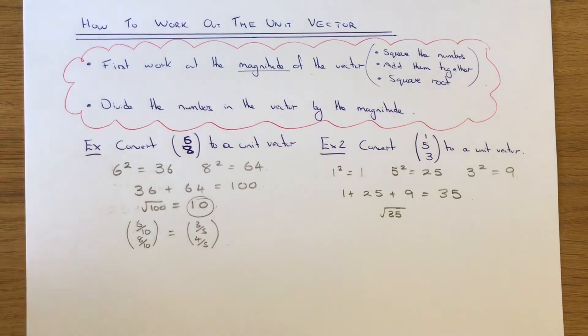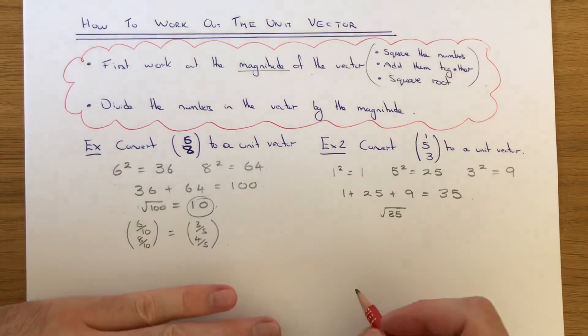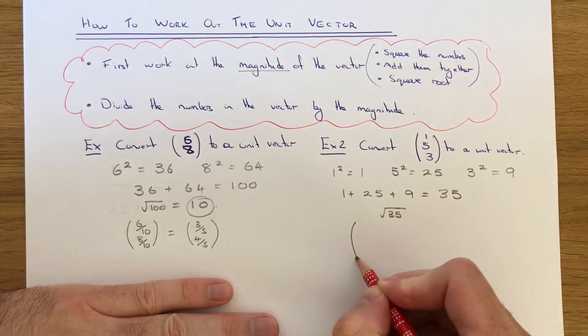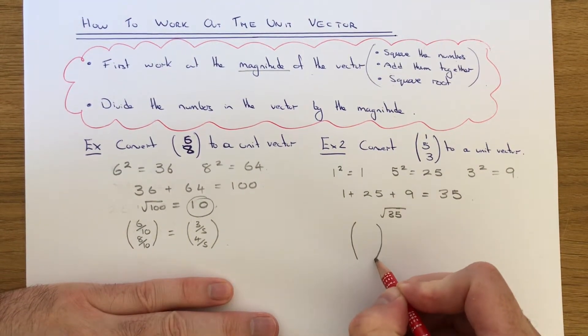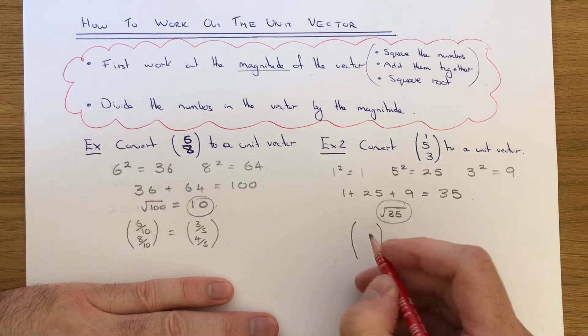Root 35 we can't work out, so let's just leave it in surd form. The final step is to divide each component in the vector by root 35.